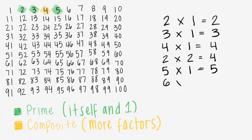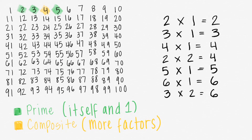6 times 1 equals 6, but I can also think of 3 times 2 equals 6. Since there's more ways to get 6, 6 is composite.